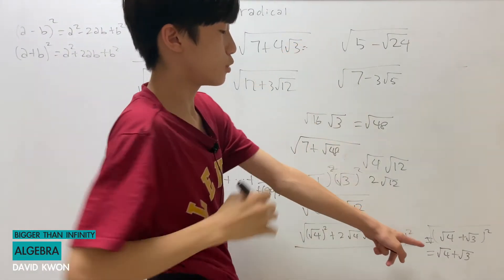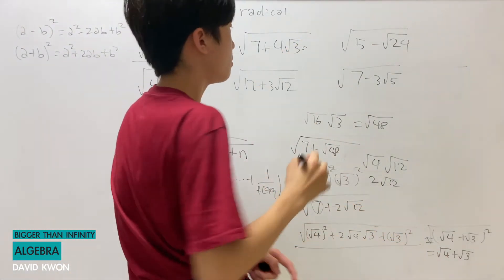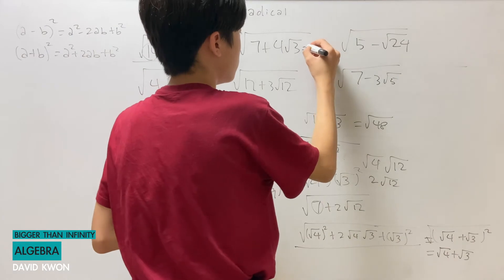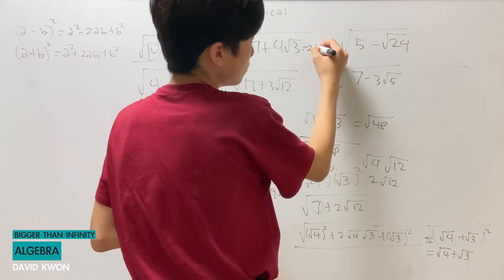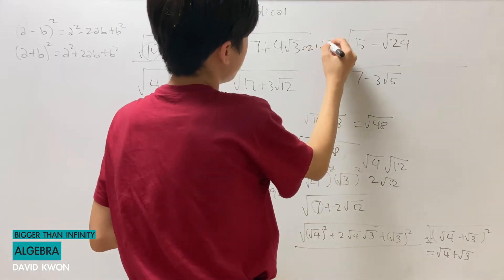The square and root cancel out, which gives us square root of 4 plus square root of 3, but square root of 4 is 2, so the answer is 2 plus square root of 3.